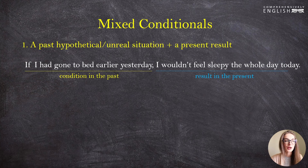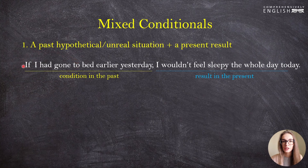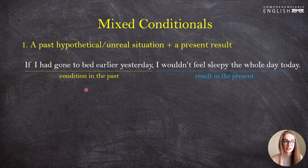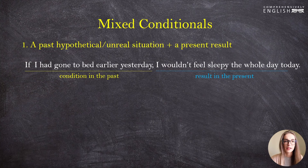So actually what we did is combine the third conditional with the second conditional. 'If I had gone' — according to the formulas, this is the third conditional. And 'would feel' — this is the second conditional. In the conditional clause we have the past perfect tense; in the main clause we have the analytical subjunctive: 'would' plus the first form of the verb. Another example: 'If he hadn't been wearing a helmet, he could be dead now.'